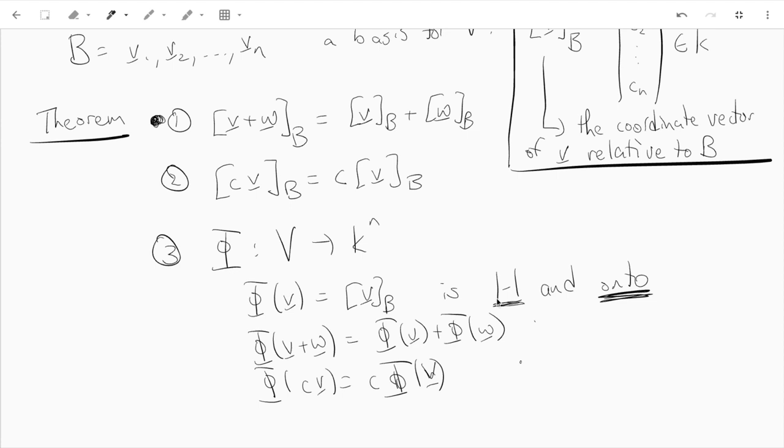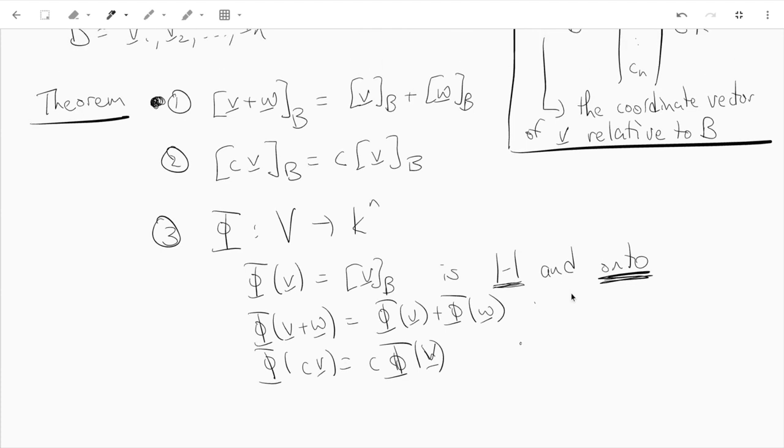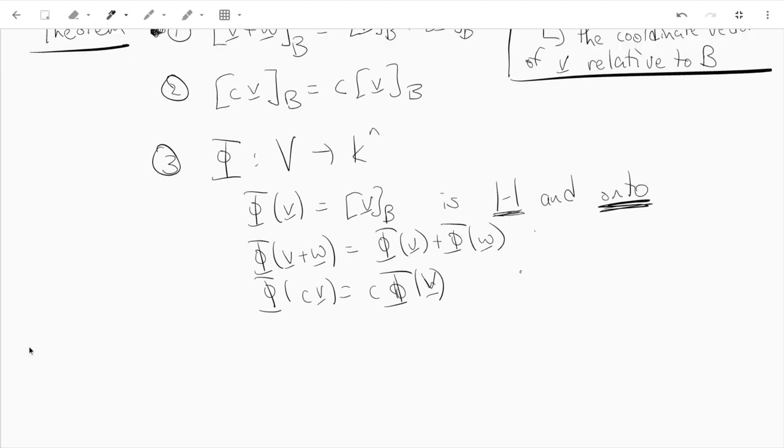Like what it says is that two different vectors have to have different coordinates, which kind of comes from things we've already talked about. So let's show that it's onto and show this first thing. Proof.